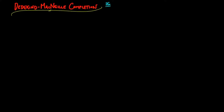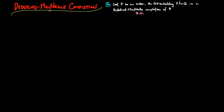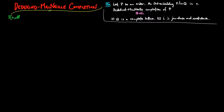Dedekind-McNeill completions of orders. Let P be an order. Then an order embedding I is a Dedekind-McNeill completion of P, provided: (1) Q is a complete lattice, and (2) I is join dense and meet dense.